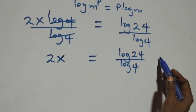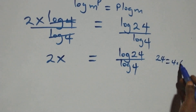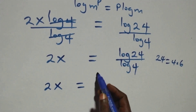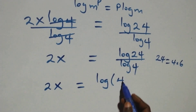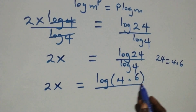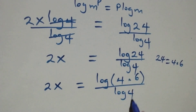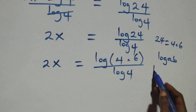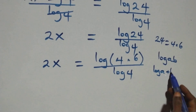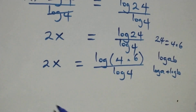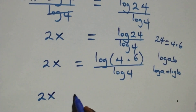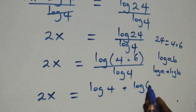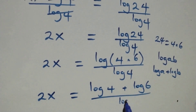From here we can express 24 as 4 times 6, so we have 2x equals log(4 times 6) over log 4. This follows the logarithm product rule: log(a times b) is the same as log a plus log b. So we have 2x equals (log 4 plus log 6) over log 4.